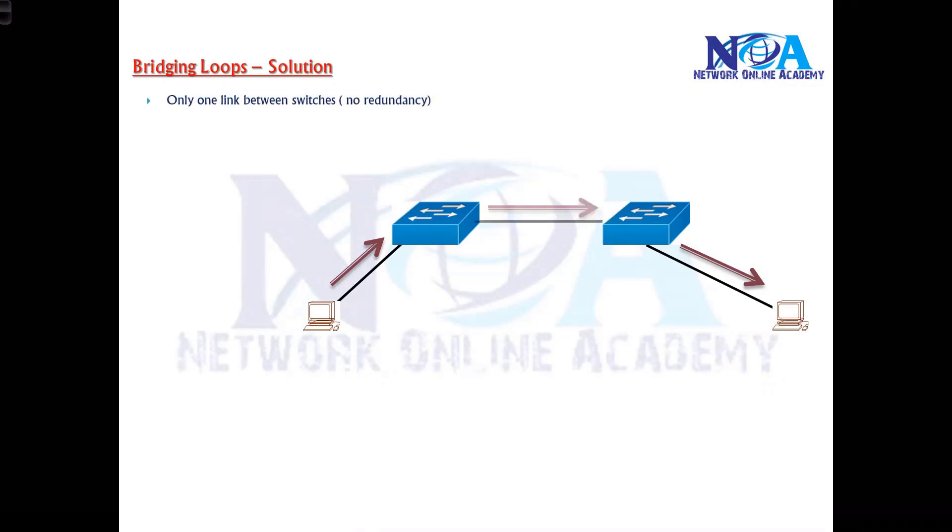Typically you can say, okay, don't use two links. Never connect multiple links switch to switch. Just go with one single link. But the problem with this one is if that particular link fails, let's say due to some reason, if there is some kind of connectivity issue or cable issue or port issue, then it's going to stop the communication completely between the users of switch 1 and switch 2.